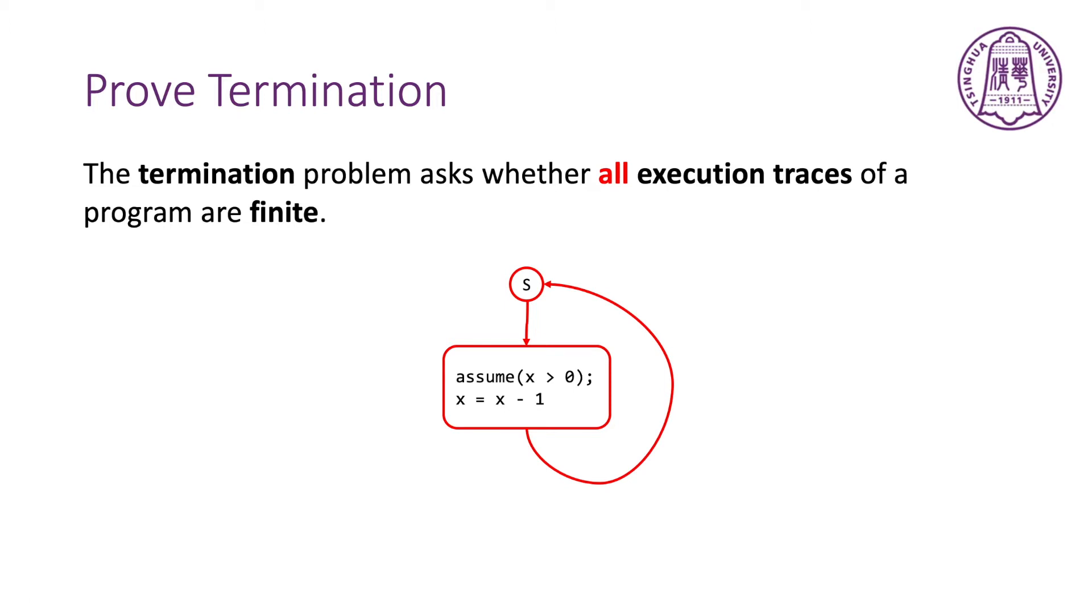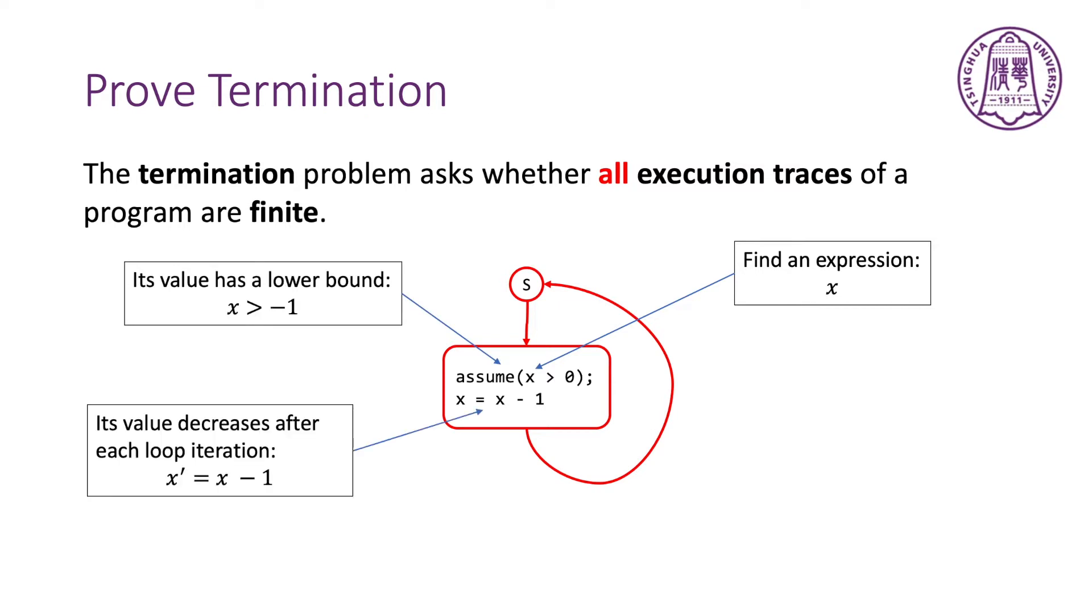We try to find an expression, for example, x. The value of the expression has a lower bound, and it decreases after each loop iteration. When finding such an expression, we can use proof by contradiction to prove that the trace is finite.